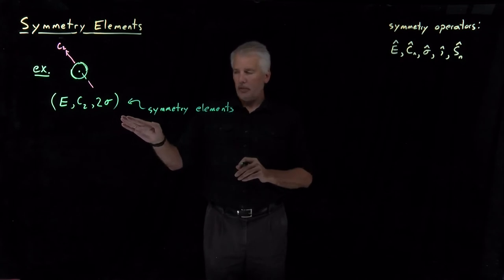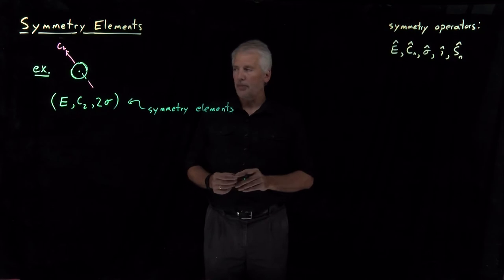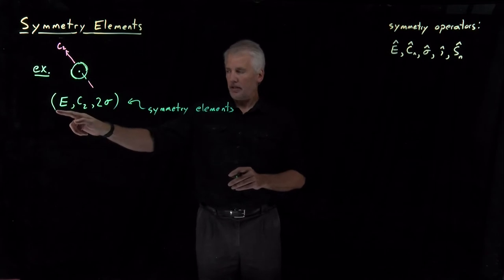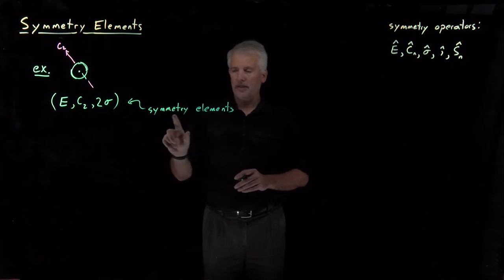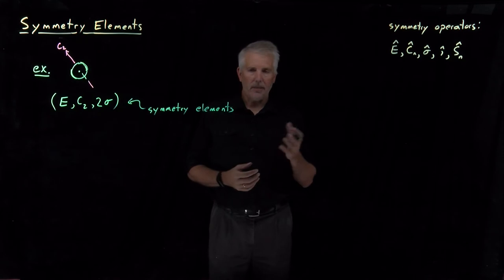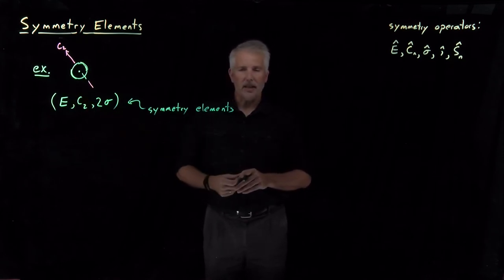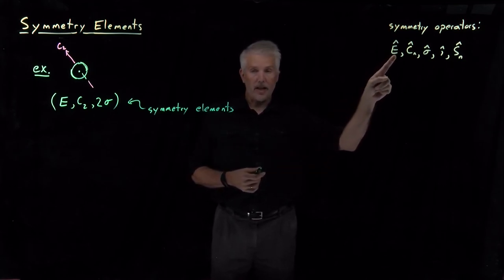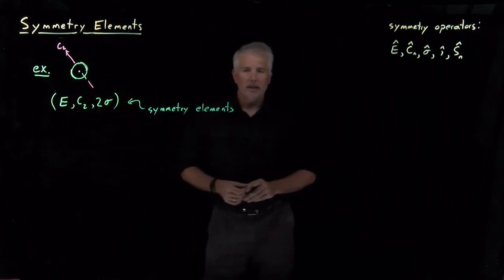Symmetry elements — what we mean by that — is the set, the list of all the symmetry operations that leave an object unmodified or unchanged. Since we're talking about a set, a list of objects, the elements of the set, or the symmetry elements, are listed without the hats on top. That just helps us distinguish between whether we're talking about an operator — the identity operator — or a symmetry element as an element of a set describing a particular object.